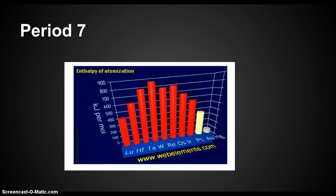Here's a picture of period 7. The elements go in order, like in the periodic table, from left to right. The numbers on the top represent the joules per mole for each element.